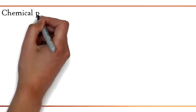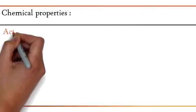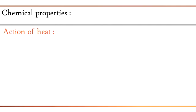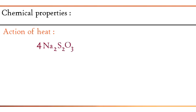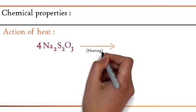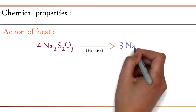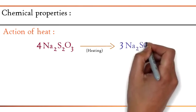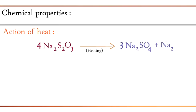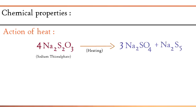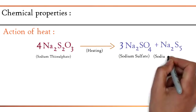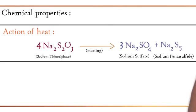Moving on to the chemical properties. First is action of heat. The equation is 4Na2S2O3 (heating) → 3Na2SO4 + Na2S5. Sodium thiosulfate on heating produces sodium sulfate and sodium pentasulfide.